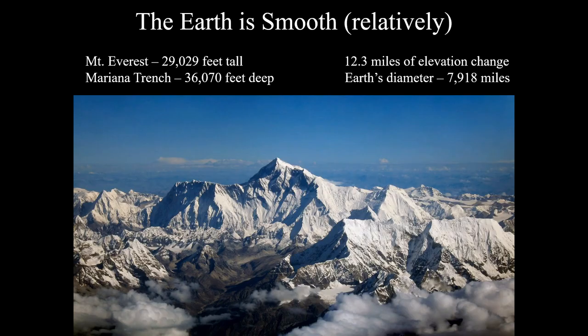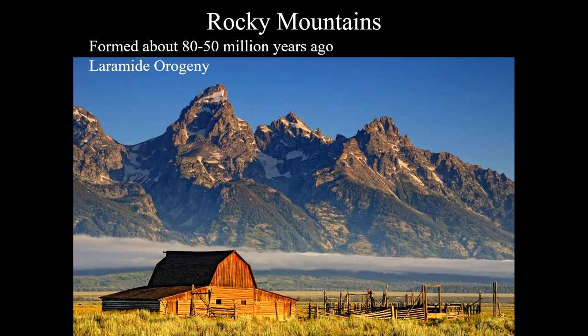There's only about 12.3 miles of elevation change on Earth — from the very tip of Mount Everest to the deepest point, the Mariana Trench, which is actually deeper than Everest is tall. You could submerge Everest into the trench and still have thousands of feet of water above. With a diameter of close to 8,000 miles, the Earth is remarkably smooth and the mountains span a whole range of ages and evolutionary life cycles.